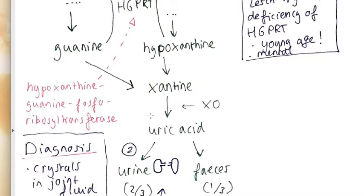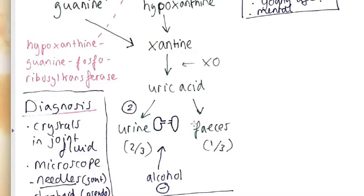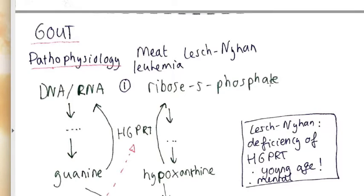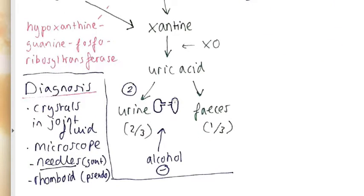So that is pretty much the pathophysiology: you will have an increased uric acid and it can deposit. Also something important is that you can have increased DNA or ribose-5-phosphate, but you can also have decreased excretion of uric acid because normally two-thirds is excreted through the kidneys. So if you have a renal insufficiency, which is pretty common in the western world where people have cardiovascular diseases, they will have less excretion of uric acid, so you will get higher levels and a higher chance of deposits in your joints.